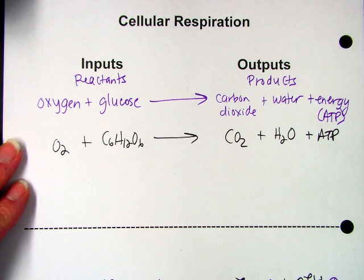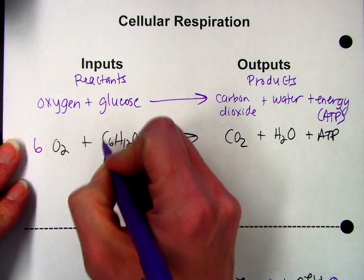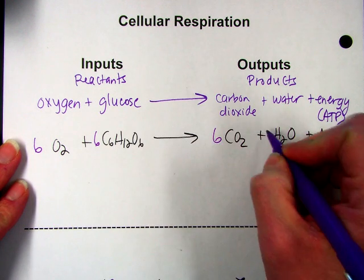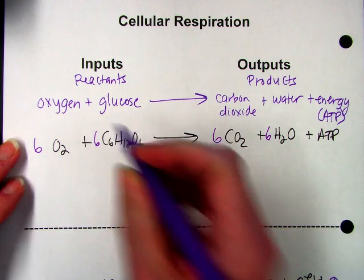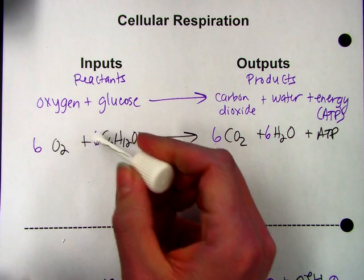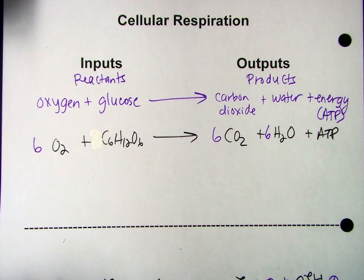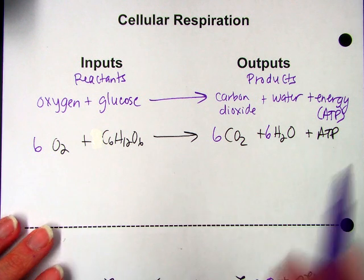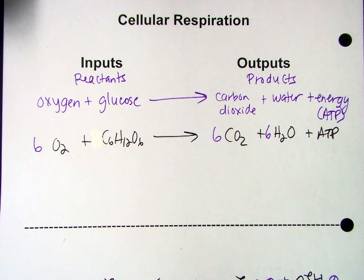We can balance this equation just like we balanced the photosynthesis equation by putting sixes. Oops, that's a mistake. I shouldn't have put a six right there. Six oxygens, six carbon dioxides, and six waters in order to produce the energy that ends up being a product of cellular respiration.